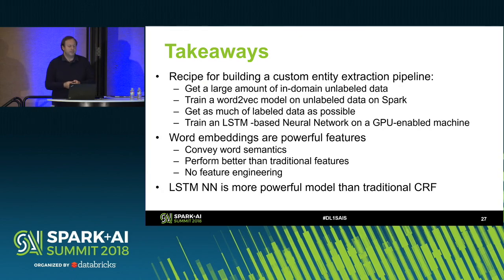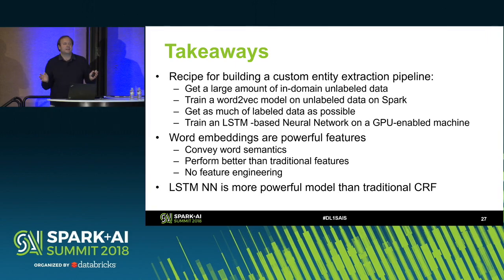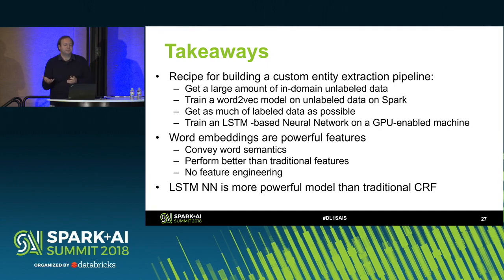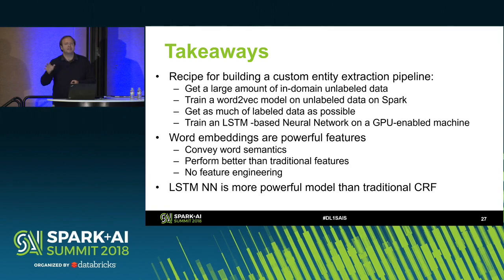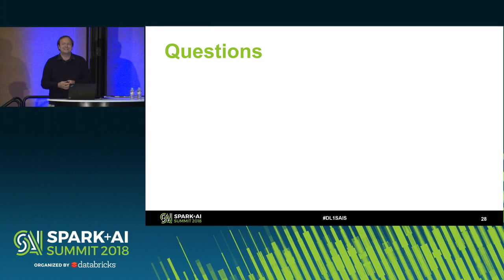To conclude: we showed you a recipe for building a custom entity extraction pipeline. Get a large unannotated corpus and train a word embedding model, then use a labeled dataset for entity extraction and train an LSTM-based neural network on a GPU-enabled virtual machine. Word embeddings are powerful features that compare well against traditional features, and domain-specific word embeddings outperform generic ones. You can find more information at our booth. Thank you.